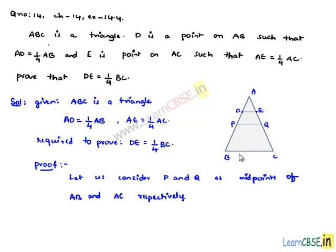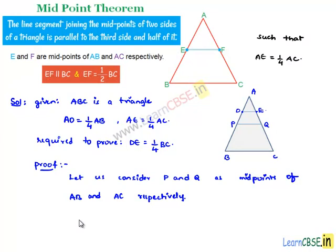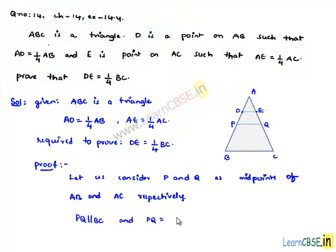As P and Q are the midpoints of AB and AC respectively, from the midpoint theorem, we can say that PQ will be parallel to BC and PQ will be equal to half times BC.